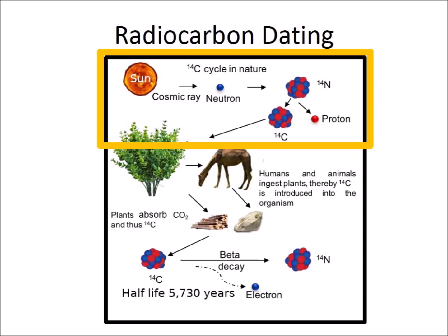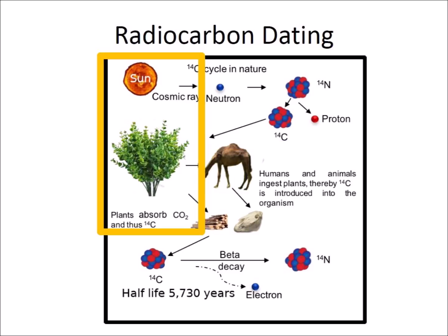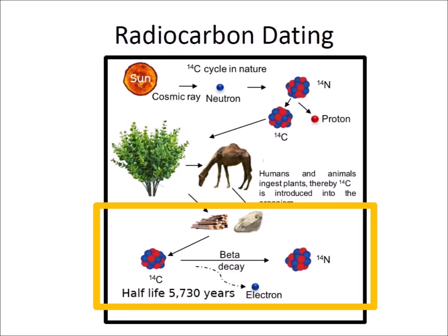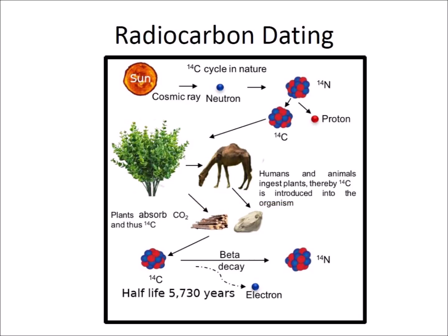The method is based on the fact that carbon-14 is constantly being created by the interaction of cosmic rays with nitrogen in the atmosphere. The resulting carbon-14 combines with atmospheric oxygen to form radioactive carbon dioxide, which is incorporated into plants by photosynthesis. Animals then acquire carbon-14 by eating the plants. When the animal or plant dies, it stops exchanging carbon with its environment, and from that point forward the amount of carbon-14 begins to decrease as the radiocarbon decays back to nitrogen. The half-life of carbon-14, which is the period of time after which half of a given sample decays, is about 5,730 years, so measuring the amount of carbon-14 in a sample from a fragment of bone or a piece of wood can be used to calculate when the animal or plant died.